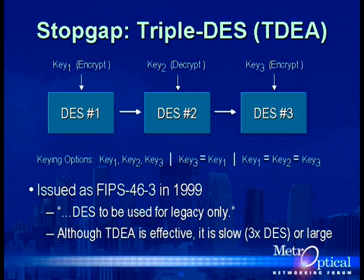As a stopgap, triple DES was introduced. This is the EDE configuration, where the first and last blocks in the chain perform encryption and the center block operates in decrypt mode — done that way for backwards compatibility. If all three keys are set the same, it is the same as a single DES unit. Xilinx's Virtex-2 family of FPGAs, for example, have built-in on-chip DES decryption units to keep their configuration data secure. But in a communication system where you need to encrypt in real time, triple DES is often slow, large, or both.